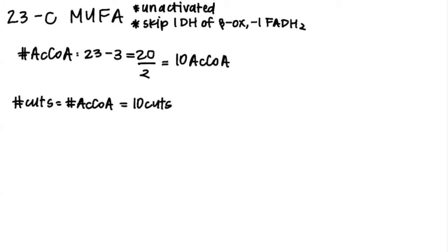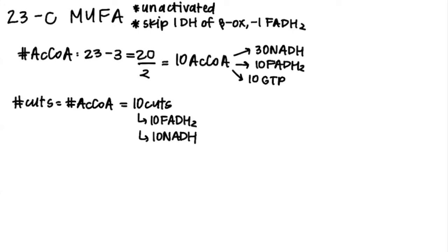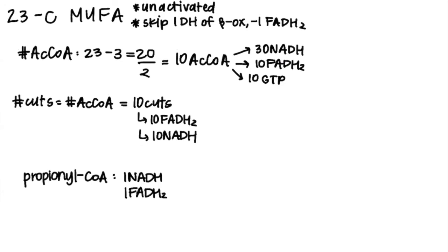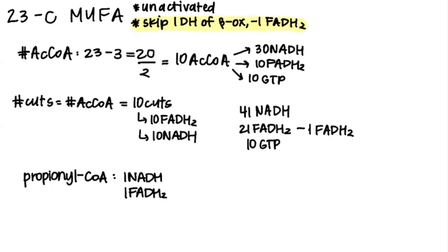Breaking everything down: putting the acetyl-CoA through the TCA cycle gives 30 NADH, 10 FADH2, and 10 GTP. Regularly, 10 rounds of beta oxidation produce 10 FADH2 and 10 NADH. Like in the last example, propionyl-CoA yields 1 NADH and 1 FADH2 when broken down. Now we add everything up, and as stated earlier, we subtract 1 FADH2 from the total because it is a MUFA.